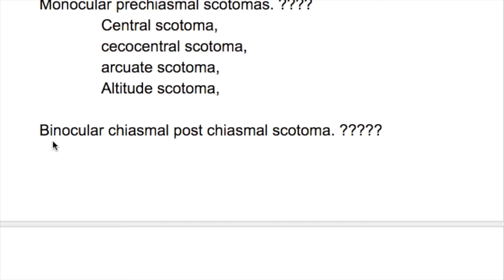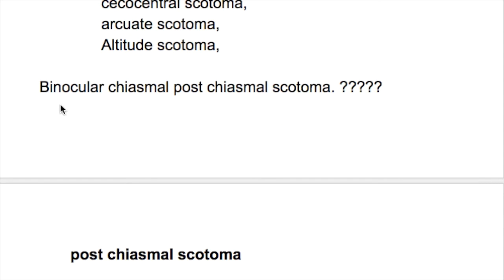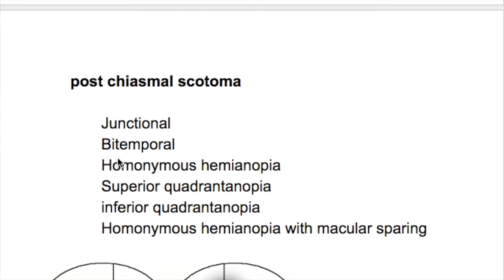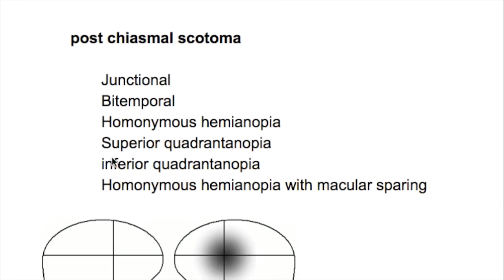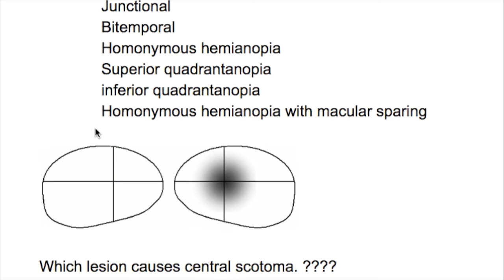The binocular scotomas are post-chiasmal scotomas and they include junctional scotoma, bitemporal hemianopia, homonymous hemianopia, superior quadrant anopia, inferior quadrant anopia, and homonymous hemianopia with macular sparing.